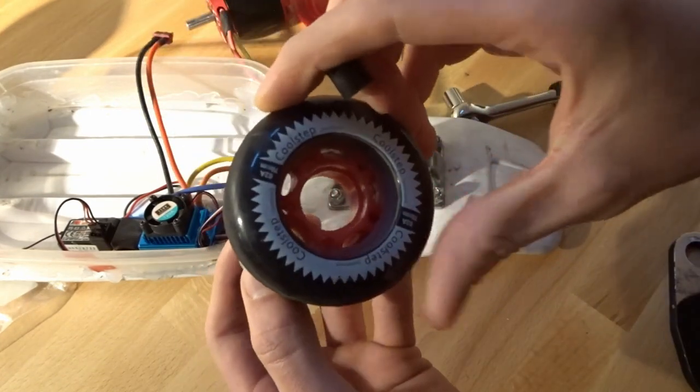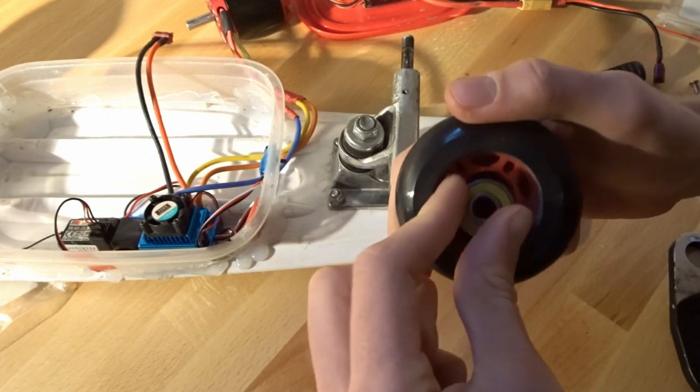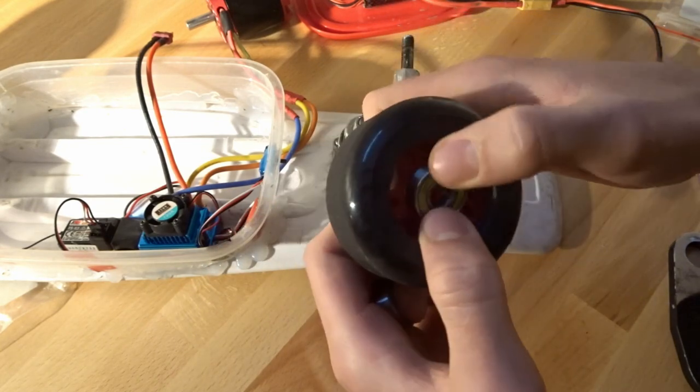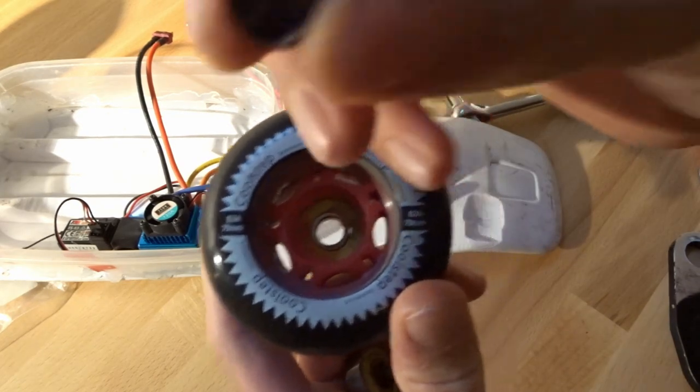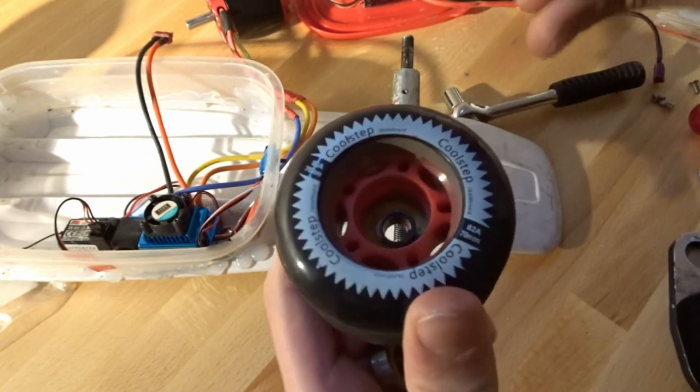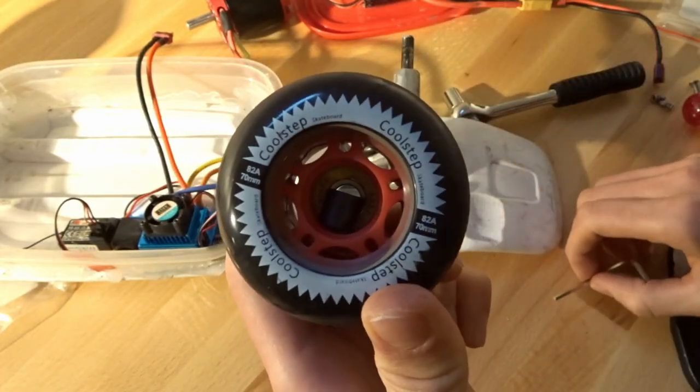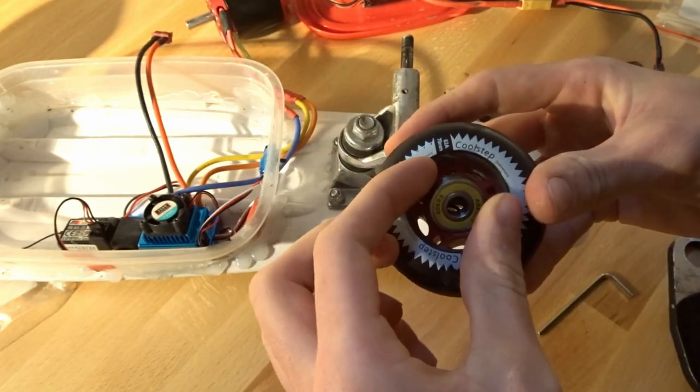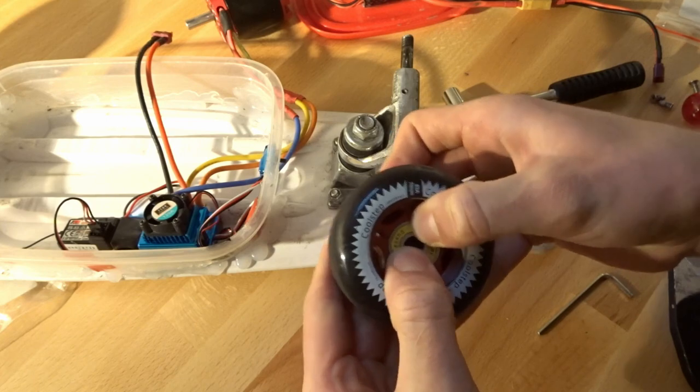You got the wheel and you just put one bearing on one side of the wheel. You just put this little thing in the middle and make sure that it's like this and not like this. And now you put your second bearing on top and you press it just with your fingers. That's it.